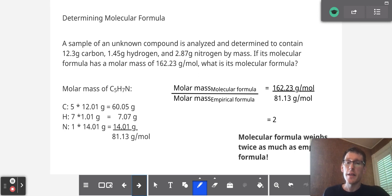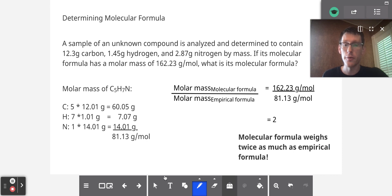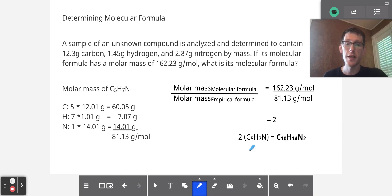We find that comes out to pretty much exactly two. This indicates that the molecular formula weighs twice as much as the empirical formula. So we just take the empirical formula, multiply everything by two, and our molecular formula is C10H14N2.